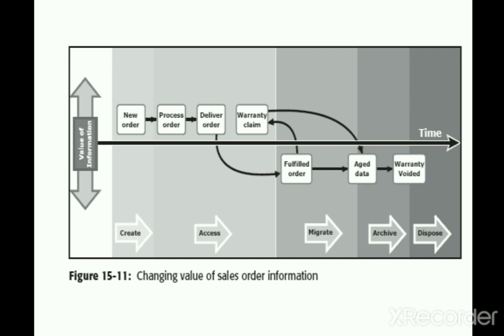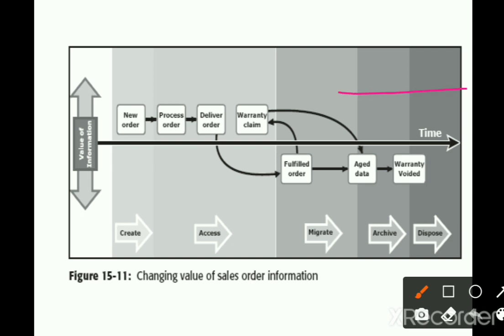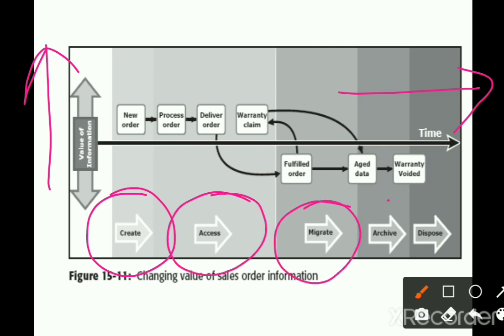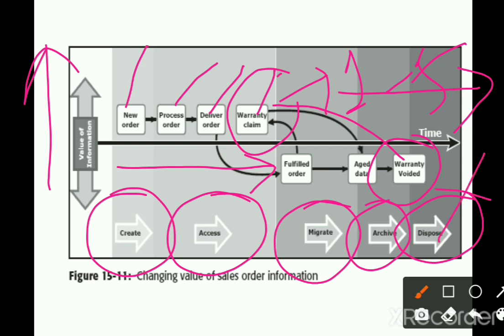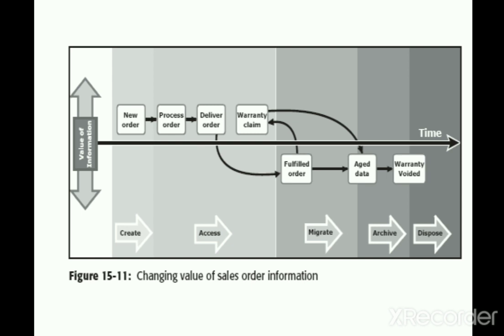The next example is the sales order. Here you can see time along the x-axis and the value of information along the y-axis. At each stage, the data is initially created, then accessed, migrated, achieved, and lastly disposed of over time. Creation is when you place a new order — you are creating data, processing that order, delivering, and claiming the warranty. Until this point the data reduces its value over time, but as the warranty — usually given for one to five years — expires, that data is no more required and can be voided and disposed.